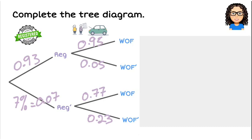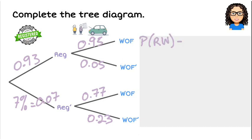Now let's work out our probabilities. The first combination is registered and warranted. We multiply 0.93 times 0.95, which gives us 0.8835.